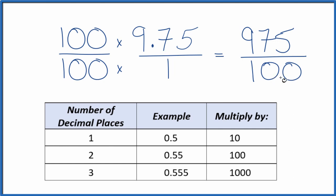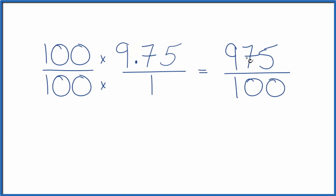But we can reduce this down to simplest terms. Let's do that. 25 would go into 975 and 100 evenly.